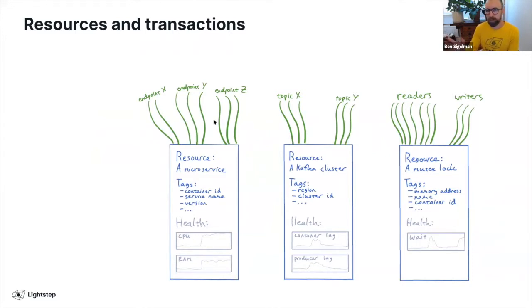You have a lot of transactions flowing through these resources at the same time. You have a bunch of telemetry coming out—you often have tracing data coming out of the transactions and metrics data coming out of the resources.